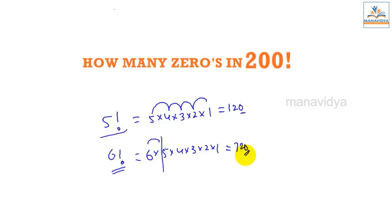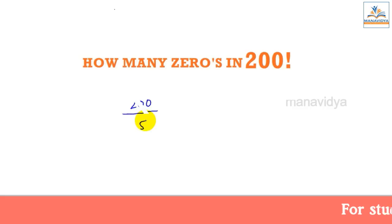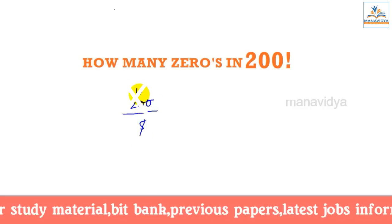Now we have 200 factorial. To find how many zeros are in 200 factorial, we need to divide by 5. So I take 200 and divide by 5. 200 divided by 5 equals 40.